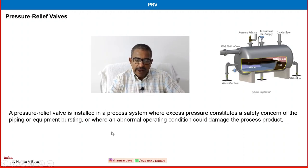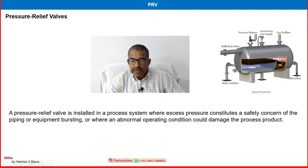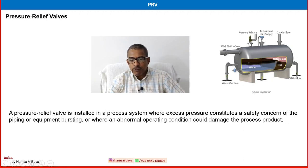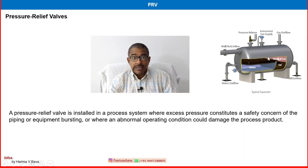A pressure relief valve is installed where excess pressure constitutes a safety concern of piping or equipment bursting, or where an abnormal operating condition could damage the process. For example, in a three-phase separator where wellhead fluid is processed into oil, gas, and water — the relief valve is connected to protect the separator from extra high pressure. Normally, the instrumentation system handles high pressure, but extra high pressure causing hazardous conditions is handled by the PRV.